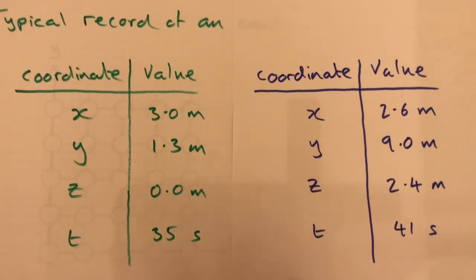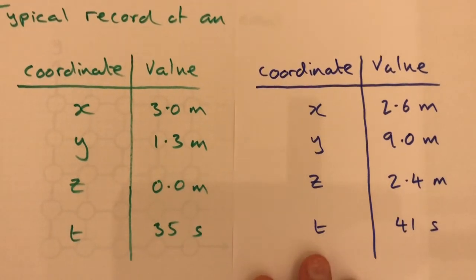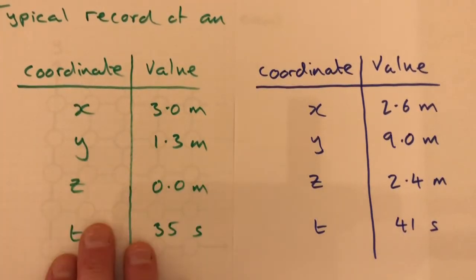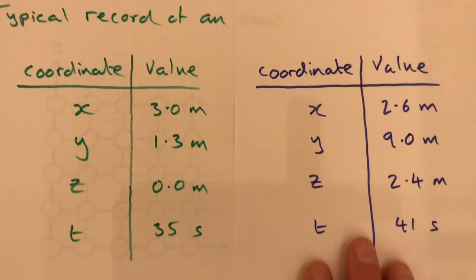So we are going to work our way towards being able to convert these coordinates for event A to these coordinates of event A via a physics that is the same for both observers.